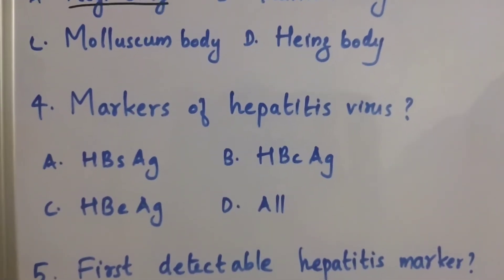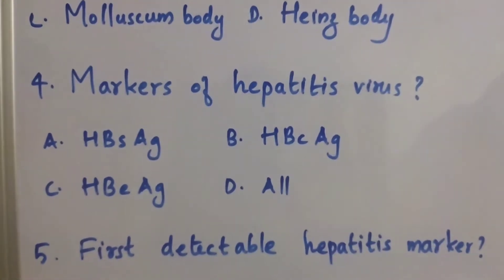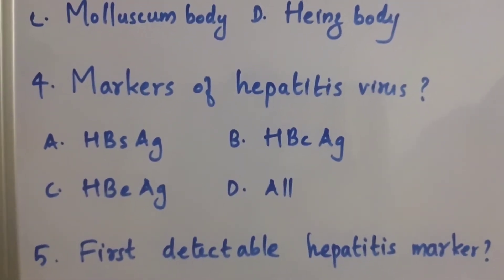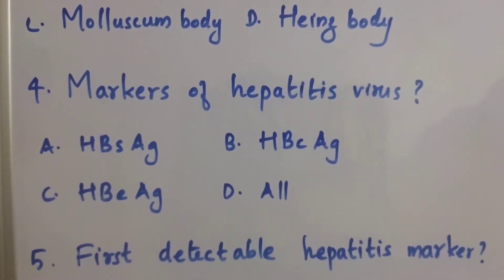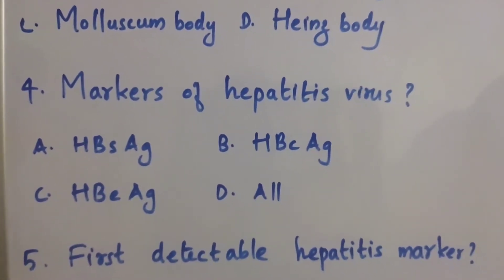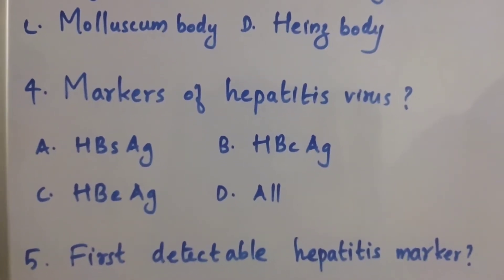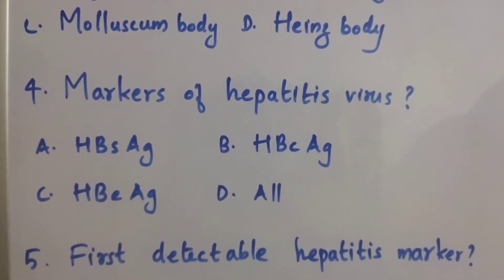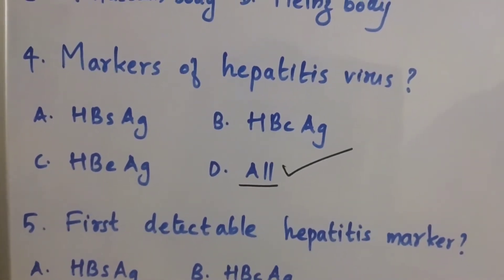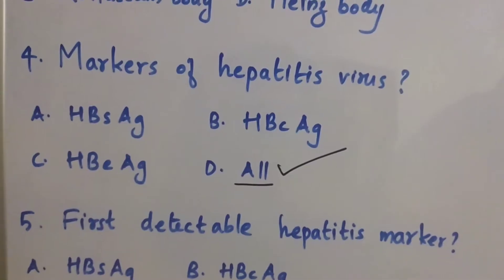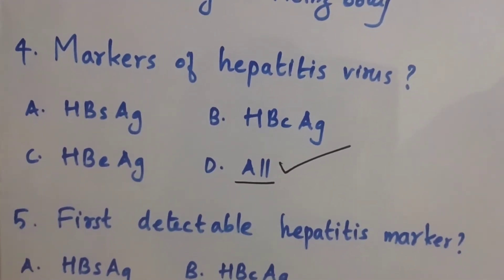Question number 4: Markers of hepatitis virus — Option A: HBsAg. Option B: HBcAg. Option C: HBeAg. Option D: All of the above. The right answer is Option D, All of the above. HBsAg, HBcAg, and HBeAg are the markers of hepatitis virus.